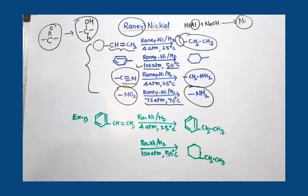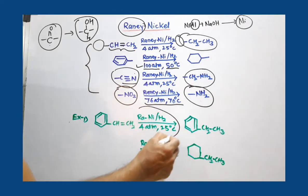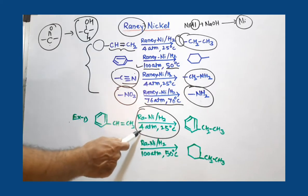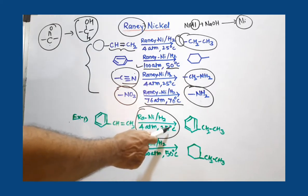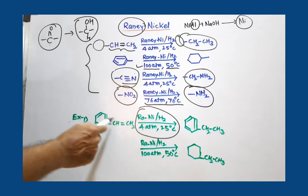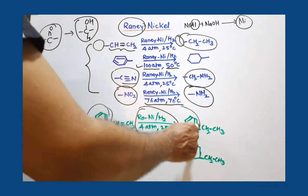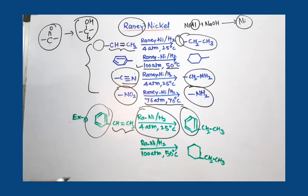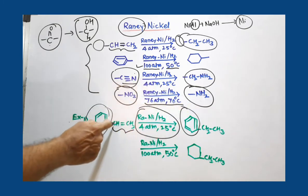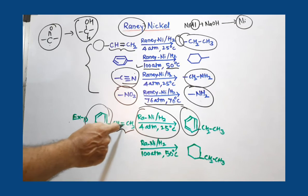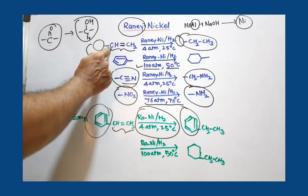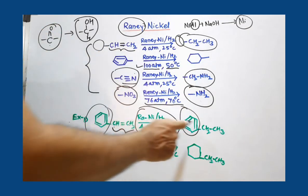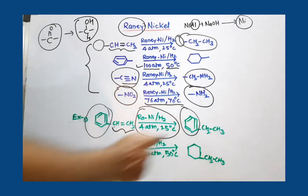Now I have taken one example. You have to just watch carefully the reaction conditions. If you are using 4 atmospheric pressure and 25 degree Celsius, under these conditions aromatic ring is not reduced. That ring remains as it is intact. Only the portion where double bond is present or triple bond is present, that is reduced. We have to select only this portion - one H is added here, one H is added here. This portion is converted to CH2-CH3.